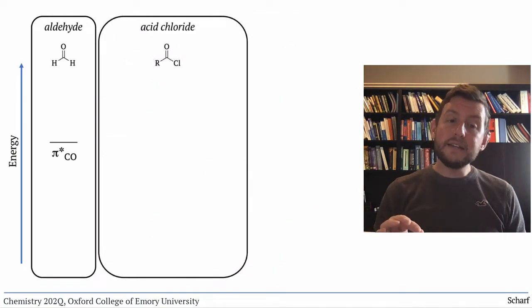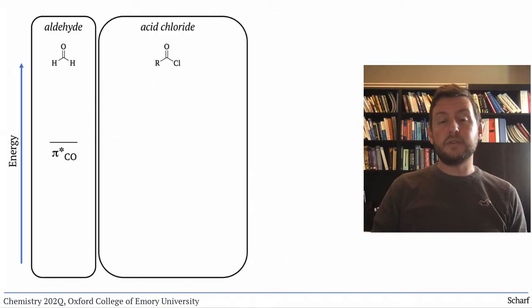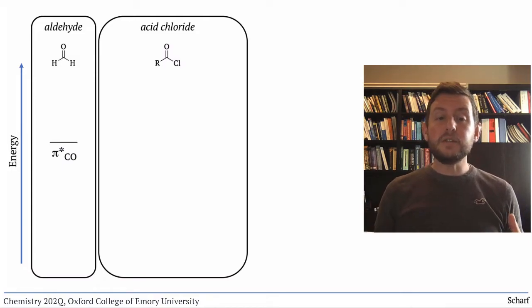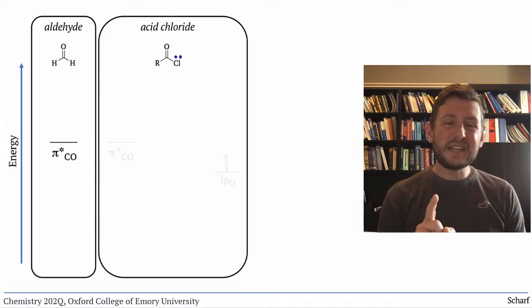Acid chlorides, the last of the carboxylic acid derivatives we'll look at, are a bit of an anomaly. They too have a lone pair on the atom adjacent to the CO pi star orbital, but this time it's on chlorine.